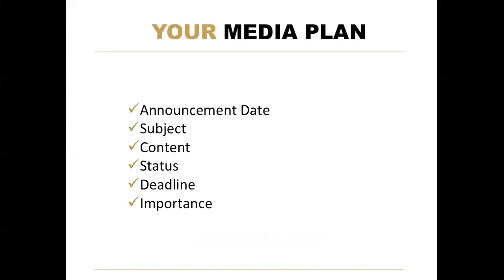Contacts should list all the media contacts or bloggers' names, their contact details, and website addresses. This makes it really easy when you need to get things done — it's all in one place. Status is an idea of what needs to be done and what's already been accomplished — think of it as your to-do list. And your deadline is obviously when everything needs to be completed; you'll have different deadlines for each piece of content within the plan.